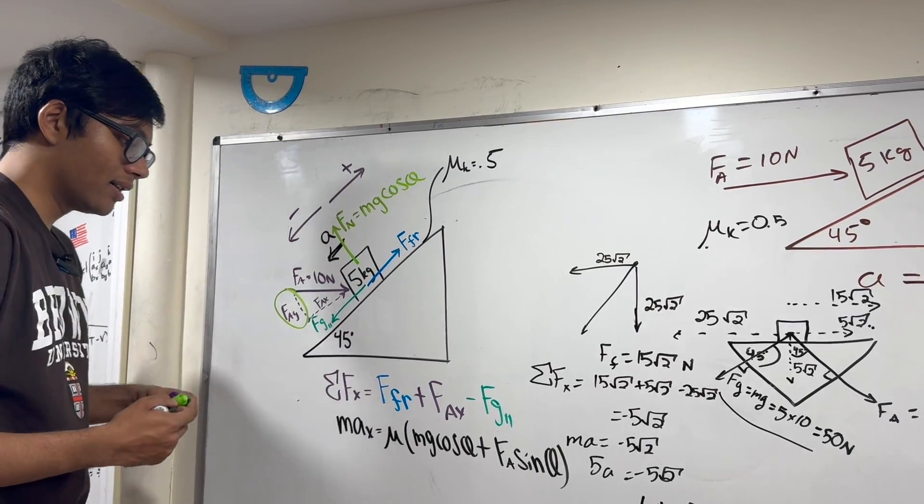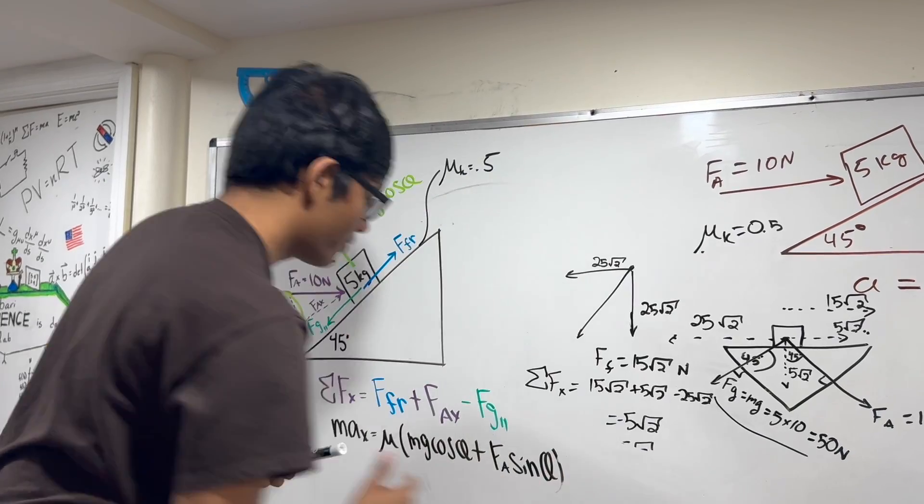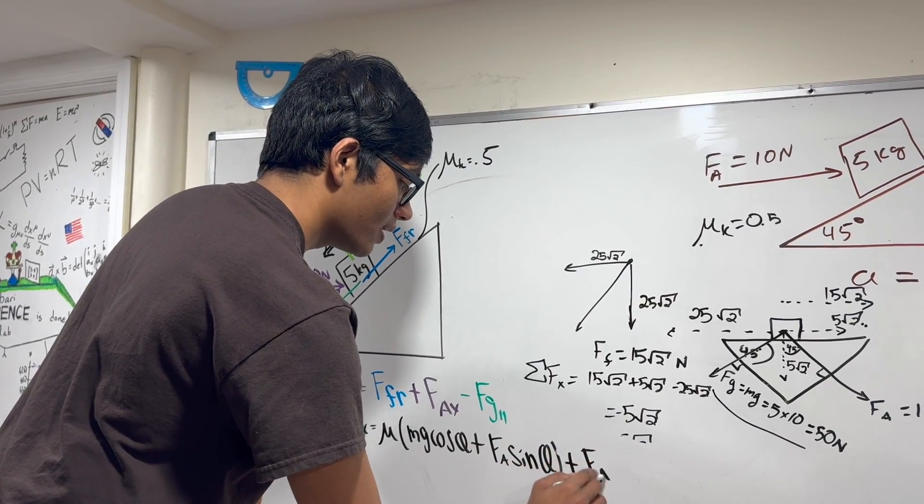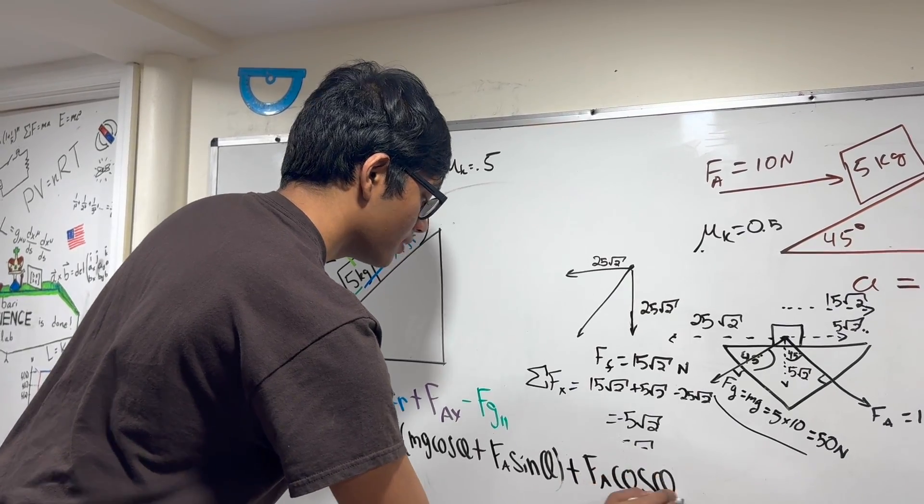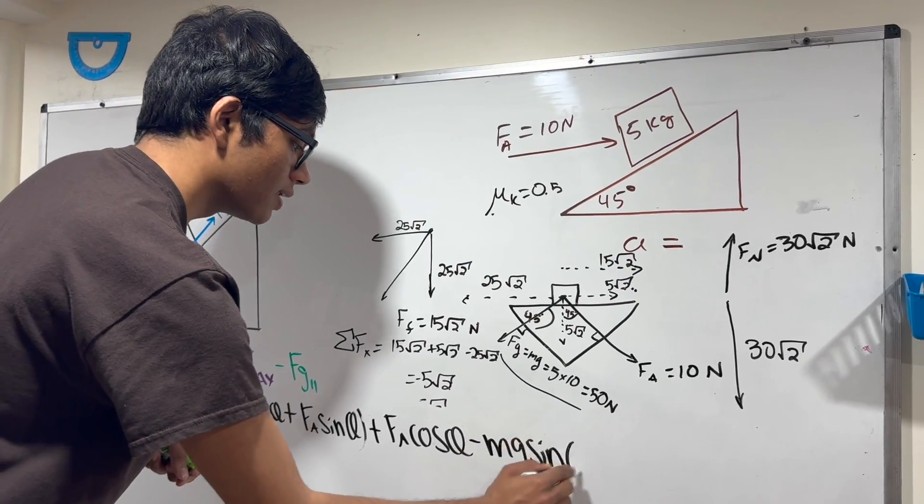Plus FAx. So plus FA cosine theta minus FG parallel, minus MG sine theta. Now we can plug everything in.